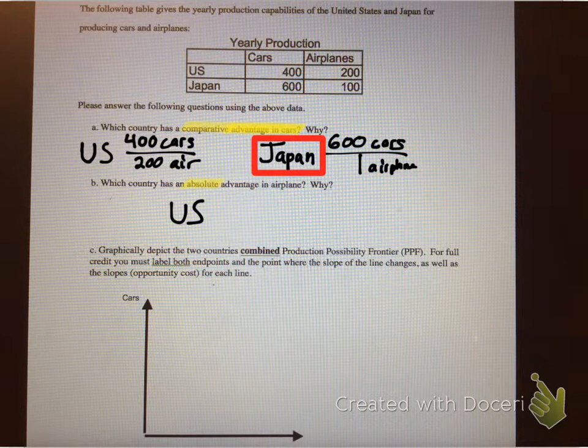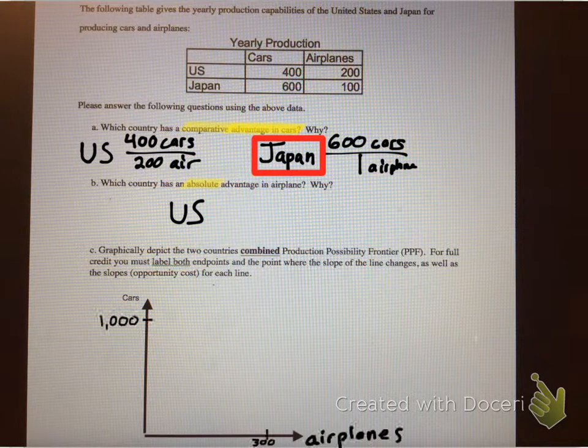Okay. So, the PPF, or Production Possibility Frontier, is pretty much when the two countries will, in this case, work together, their combined outputs, to see if they can maximize their Production Possibility Frontier. So, if both the U.S. and Japan allocated all of their resources to cars, what would the total be? So if the U.S. can produce 400 and Japan can produce 600, the total would be 1,000 cars, if they produced zero airplanes. So we put that on the axis.